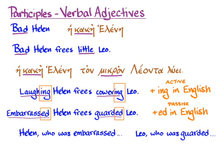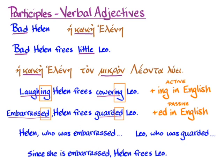Participles can do more than just tell us more about a particular noun — they can tell us what's going on in the circumstances of the whole sentence. In English, if I add a comma: 'embarrassed Helen frees guarded Leo,' that can imply a whole circumstance — since she is embarrassed, Helen frees Leo. You might be able to tell even without the whole clause that the relationship between 'embarrassed' and the rest of the sentence is one of cause. This is why she's doing it, and Greek participles are going to do things like that all the time.